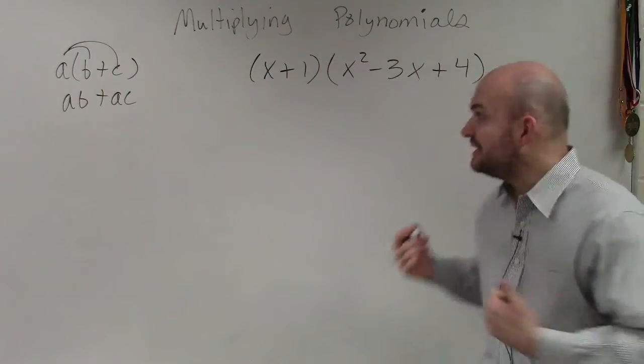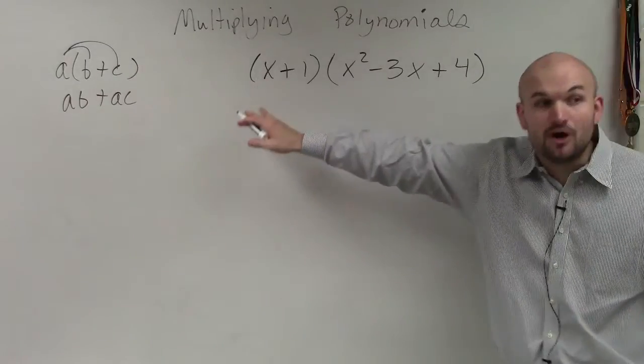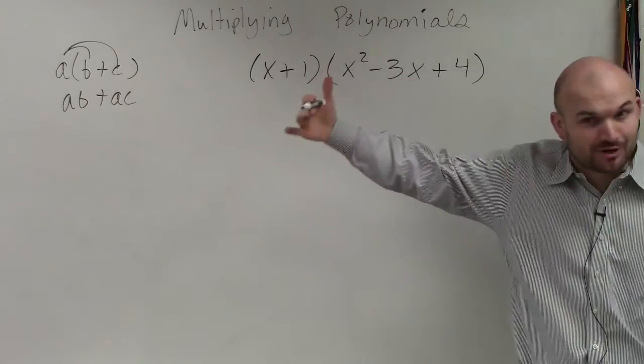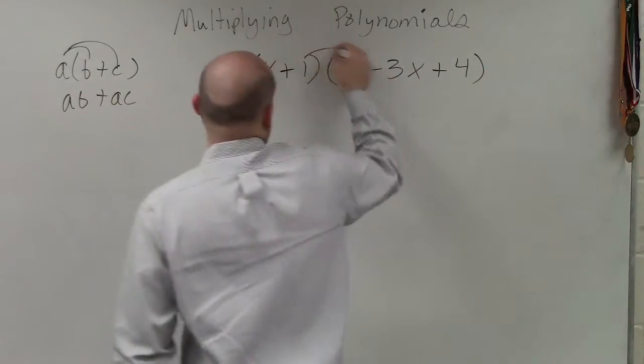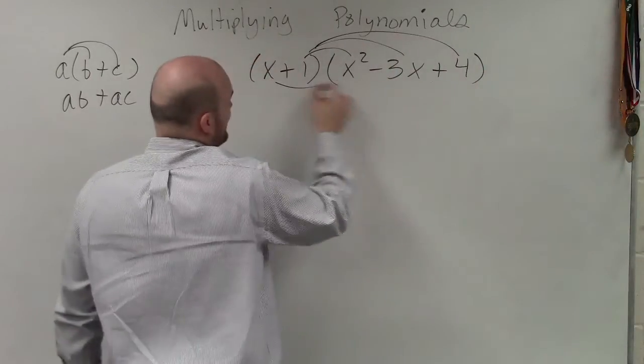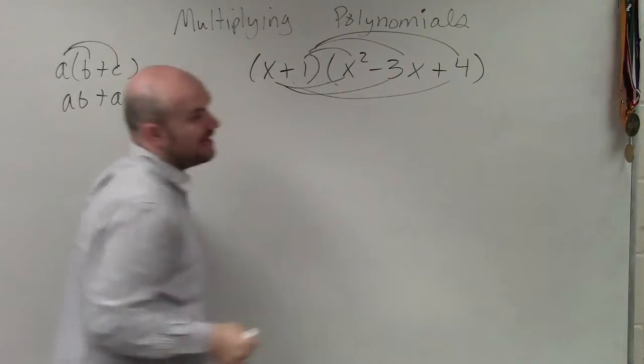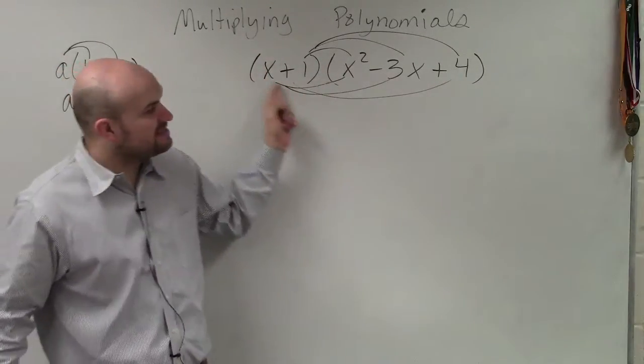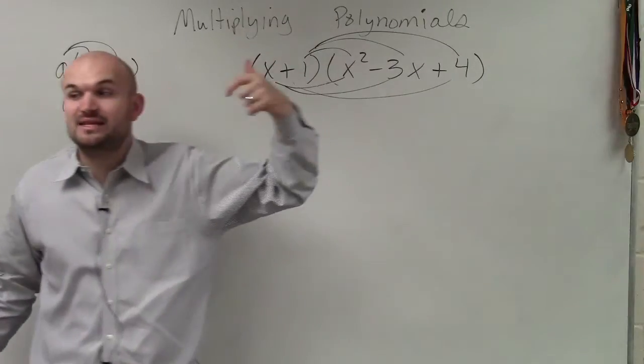But it becomes an issue once we have a binomial being multiplied by a trinomial, or even worse, a trinomial by a trinomial. This distributive property thing can get very confusing, and you start multiplying this number by everything over here and then this term by everything over there, and it becomes a lot of multiplication.